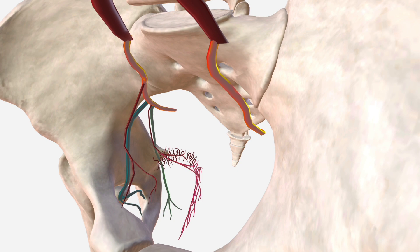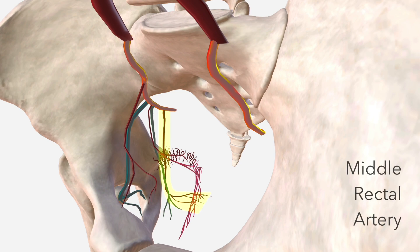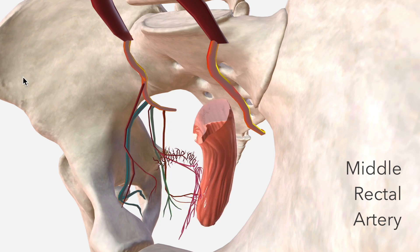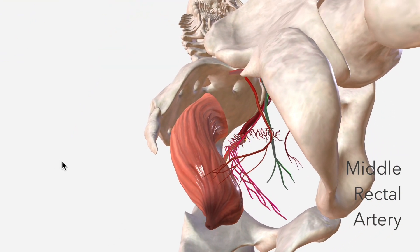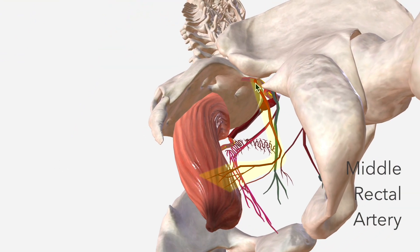We have the middle rectal artery, which passes inferiorly towards the lower rectum to anastomose with the superior rectal artery. Bringing in the rectum for context and looking at the posterior aspect, we can see the middle rectal artery passing inferiorly towards the lower rectum.